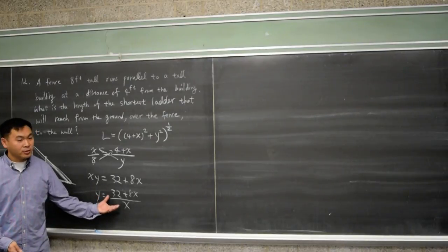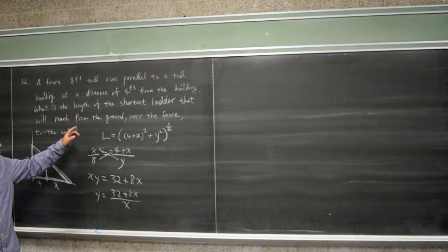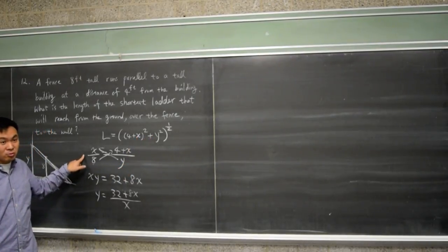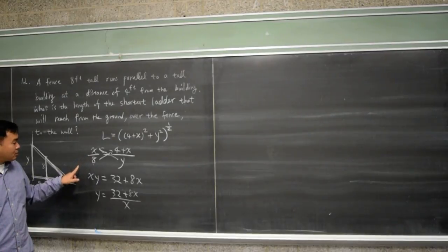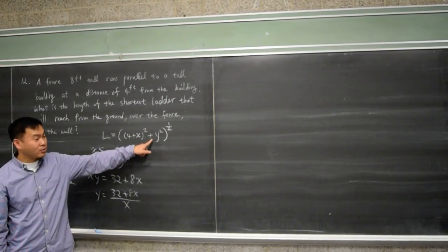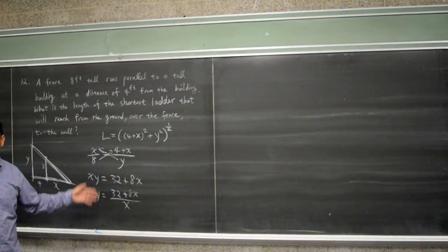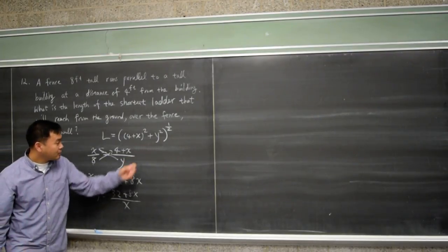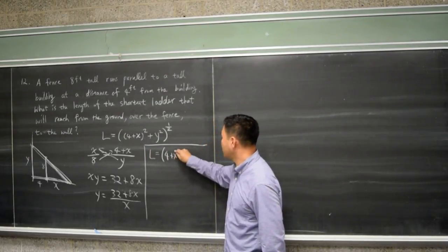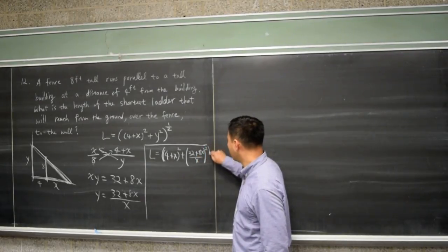Let me go over the five steps for solving an optimization question. First, identify the target. Second, figure out the relationship between the variables — the constraints. Third, solve the constraint for one variable. Fourth, plug what you solved back into the target function so it becomes a function of a single variable. Fifth, use calculus. So plugging in, we get L = [(4 + x)² + (32 + 8x)/x²]^(1/2).